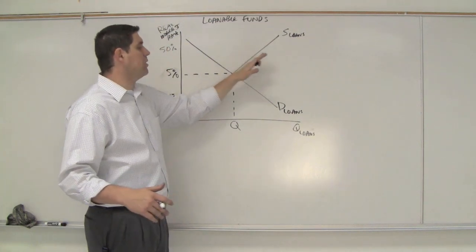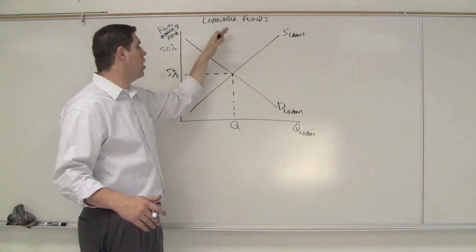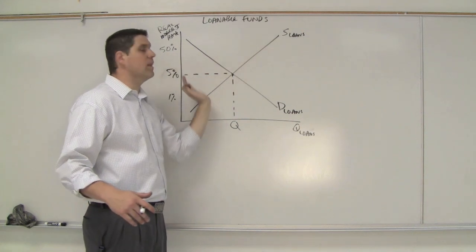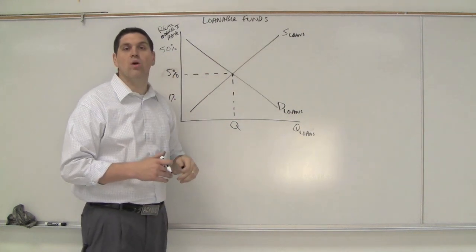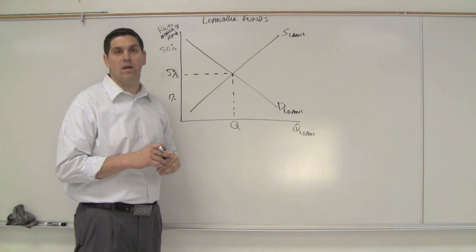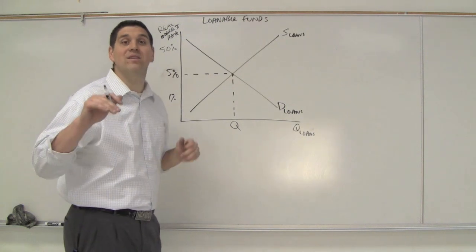If people want to supply more loans, or they want to decrease supply of loans, or for some reason people want more loans or want less loans, that will affect the actual equilibrium real interest rate. But the one I want to talk about is this. It's called deficit spending.